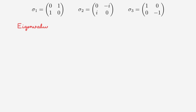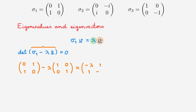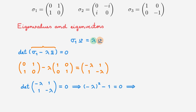Let's move on to the eigenvalues and eigenvectors of the Pauli matrices. We'll take sigma 1 as an example and write its eigenvalue equation, where lambda are the eigenvalues and phi the eigenvectors. To find the eigenvalues we consider the characteristic equation: sigma 1 minus lambda times the identity matrix evaluates to the matrix with entries -lambda, 1, 1, -lambda. Setting its determinant to 0 gives lambda² - 1 = 0, leading to lambda equals plus or minus 1. Therefore the eigenvalues of sigma 1 are +1 and -1.